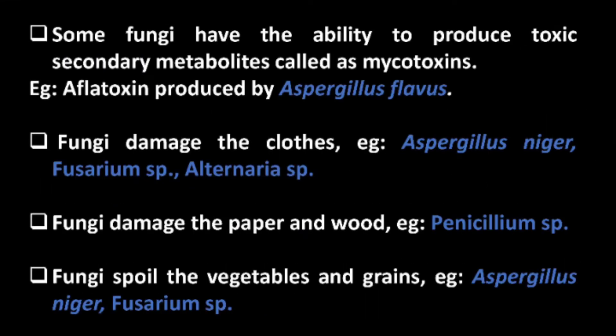Some fungi have the ability to produce toxic secondary metabolites called mycotoxins — example: aflatoxin produced by Aspergillus flavus. Fungi also damage crops — example: Aspergillus niger, Fusarium species, and Alternaria species.